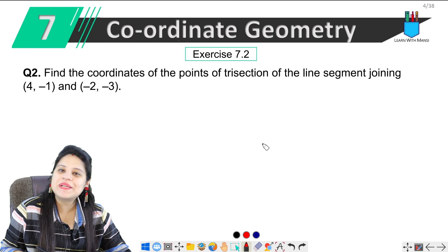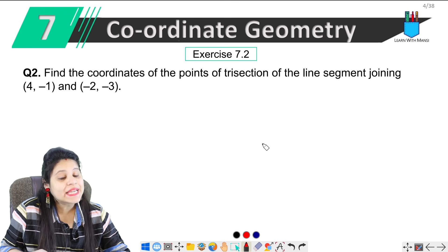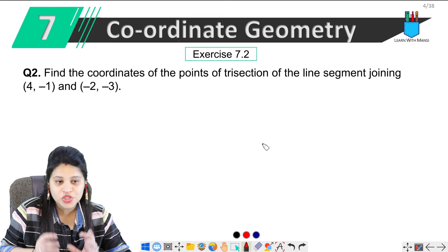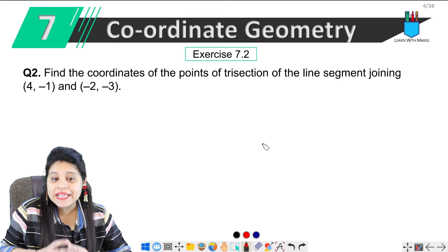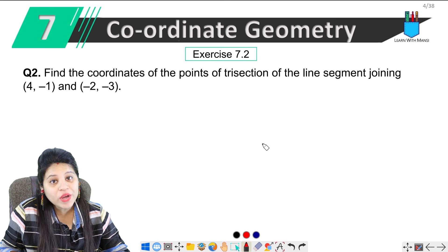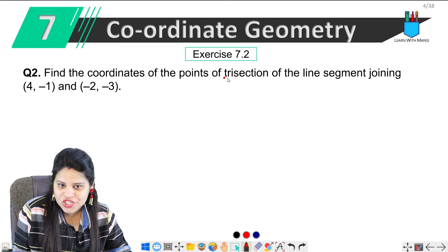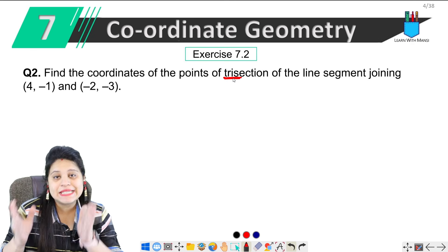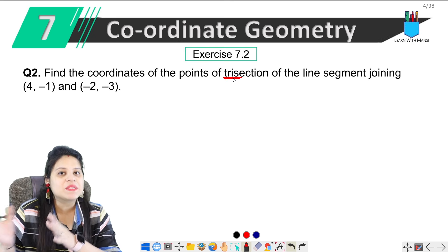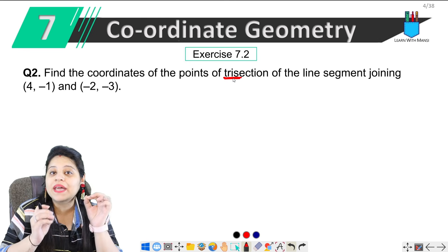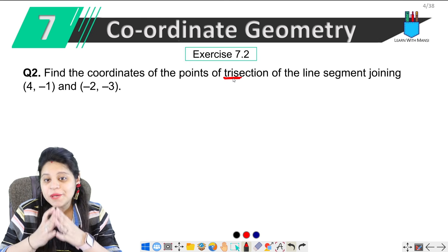Hello my lovely students, this is Mansi. Welcome back to the channel. Now we are on the second question of Exercise 7.2. Question number two says find the coordinates of the points of trisection. Trisection kya hota hai? Agar ek line segment ko 3 equal parts mein divide kiya jaye, to usko hum bolte hai trisection.